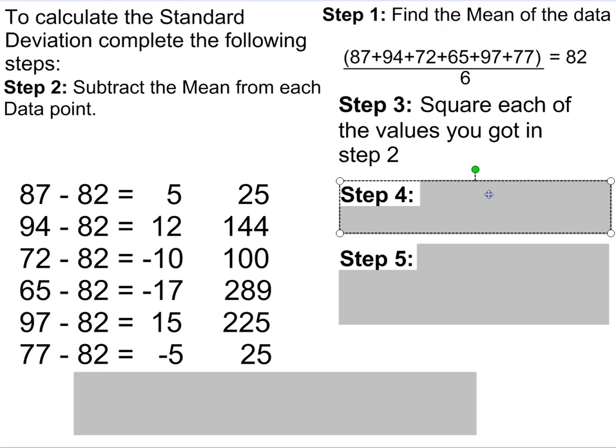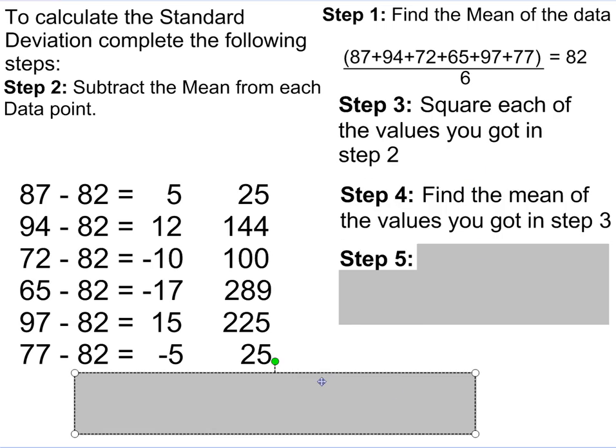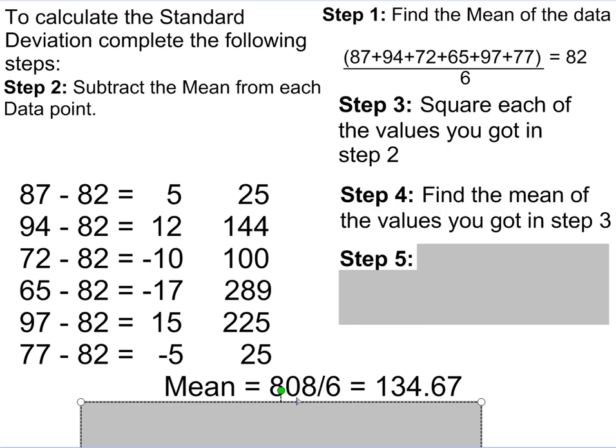Step 4 is to find the mean of those values we just got. So in this case, we'd add up those values and get 808 divided by 6, and my mean is 134.67.